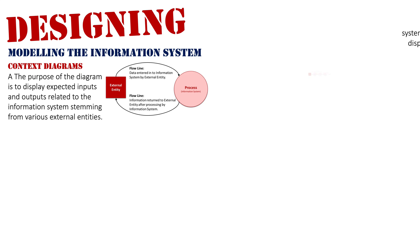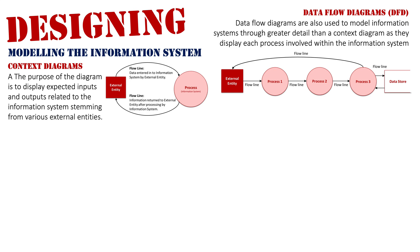From there it evolves into a data flow diagram, which is also used to model information systems but goes into greater detail than a context diagram by displaying each process involved within the system. Here we have multiple circles, each representing a different information process, as well as data stores representing databases where data will be stored. These are much more complex diagrams, showing all processes and flow lines of data from entry right through to where information is presented back to the external entity.